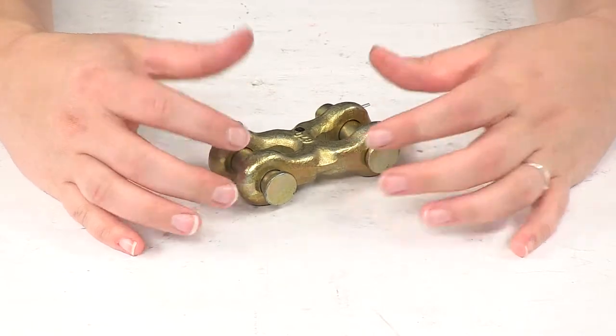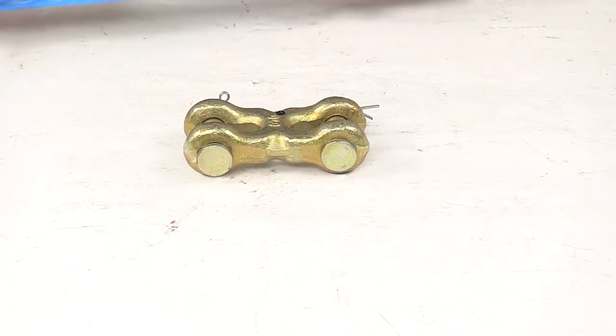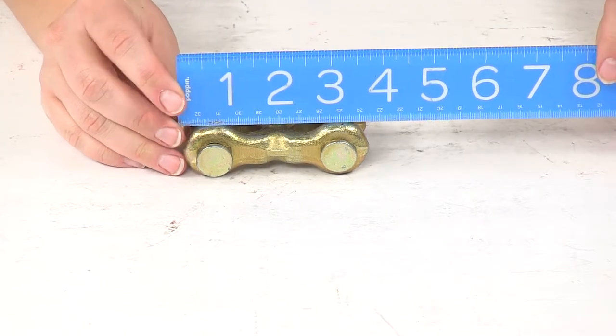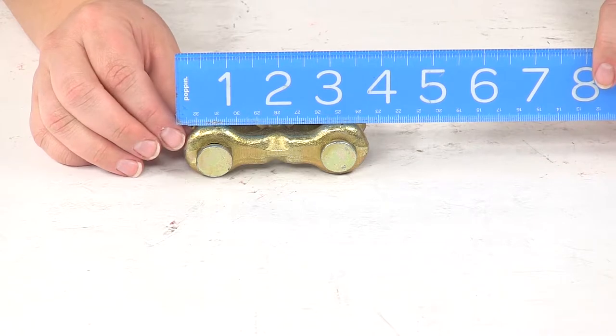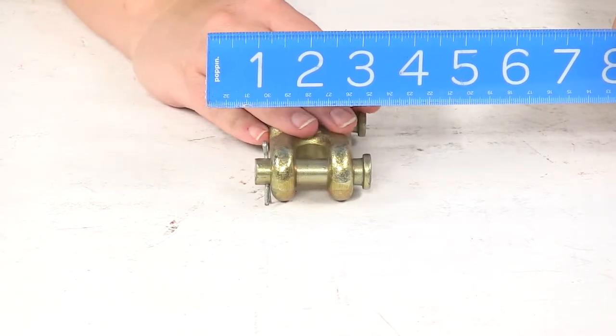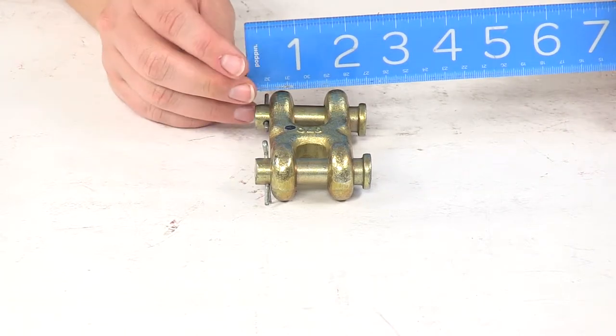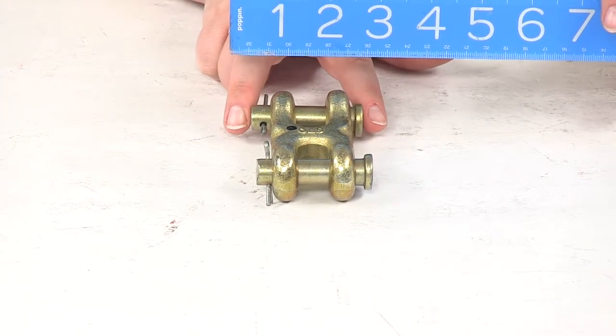As far as the specs go with this mid-link overall, it's going to measure about 3 and 5 eighths inch long from the edge to edge, and it's going to be about 2 and a quarter inches from either end of the clevis pins.